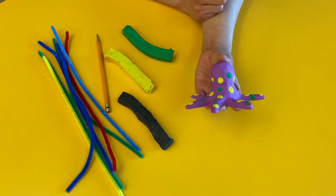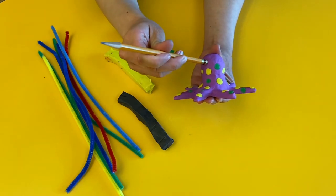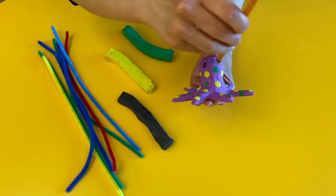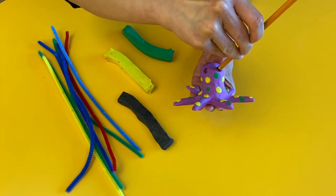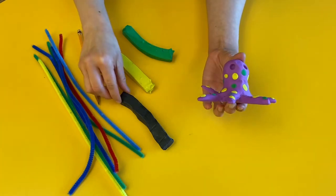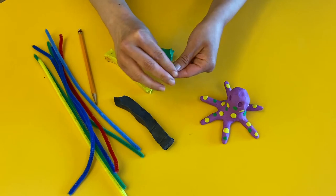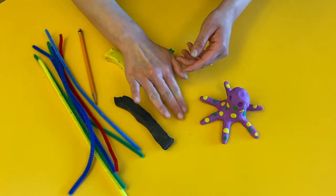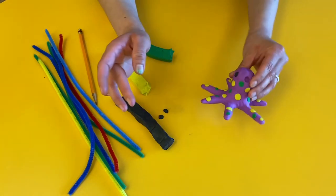Now I'm gonna make the eyes. Take your pencil and poke some holes in the clay like this. Okay and now you're gonna take some more clay and roll it into a small ball and then insert it into the hole like that.